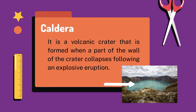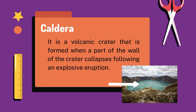Next is Caldera. It is a volcanic crater that is formed when a part of the wall of a crater collapses following an explosive eruption. A caldera collapse is usually triggered by the emptying of a magma chamber beneath the volcano as a result of a large volcanic eruption.